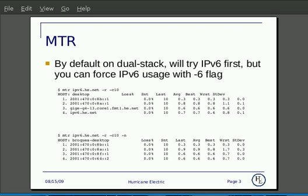With MTR, on a dual stack machine, it's going to try IPv6 first because it looks up Quad A records first. But if you want to force IPv6 usage, you would use the command mtr-6. In the two examples, we're running mtr against ipv6.hu.net in reporting mode with a count of 10 from my workstation.